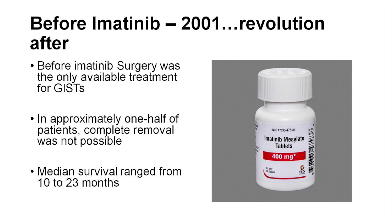The real revolution was in 2001. You can split GISTs into before and after imatinib. Before imatinib, surgery was really the only viable treatment, but approximately half of patients would have tumour recurrence, and sometimes complete removal was not possible. I do remember seeing patients with very, very big tumours, and it's a real contrast to what we see now.